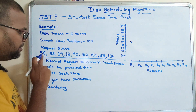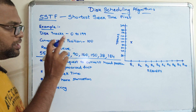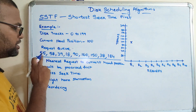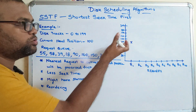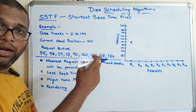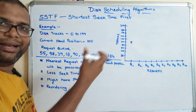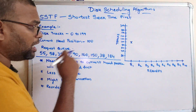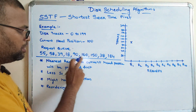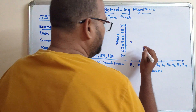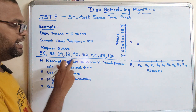Instead of going to 55 — which is the first request in the queue — the head will not move towards 55. It will first check which request is closest to 100. It doesn't follow arrival order; it follows the nearest track to the current head position. From 100, the nearest request is 90, so the second request processed will be 90.